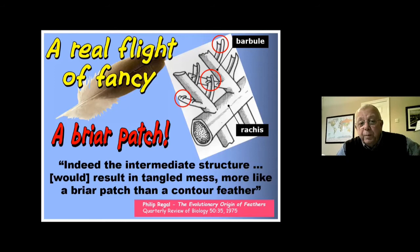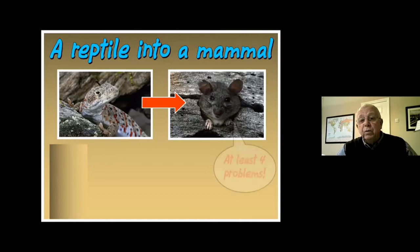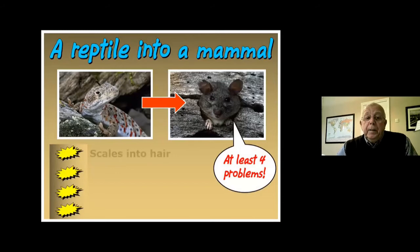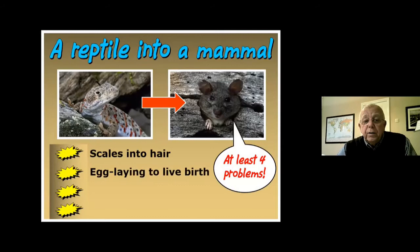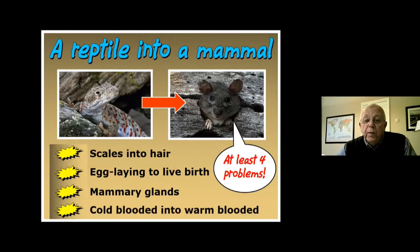Then they tell us reptiles turned into mammals. You've got at least four problems: how do you get scales turning into hair? A scale is a fold in the skin, but a hair sits in its own follicle. How do you go from egg-laying to live birth? You need mammary glands so the offspring can suckle. And you're going to turn a cold-blooded creature into a warm-blooded creature. But it happens in the minds of men.